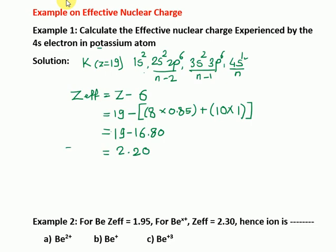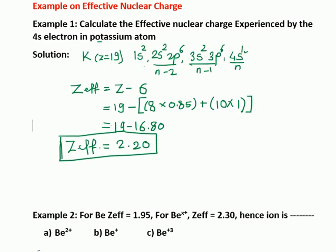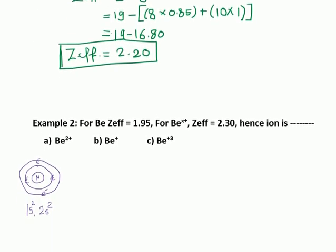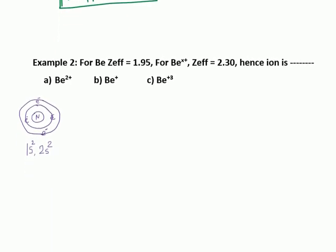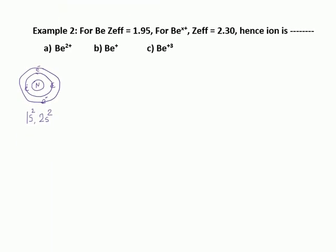In this way you can calculate Z_eff for any electron in any atom. Now for the second example: for neutral beryllium, Z_eff = 1.95 for the outermost electron. For the beryllium ion, Z_eff = 2.30. The same steps apply — first write the electronic configuration, then identify the n shell and n−1 shell.